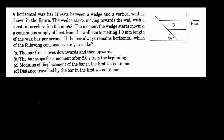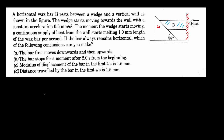A horizontal wax bar B rests between a wedge and a vertical wall, as shown in the figure. So there is a wedge and a vertical wall — this is the vertical wall — and a bar is resting between them. The wedge starts moving towards the wall with a constant acceleration of 0.5 millimeters per second squared.